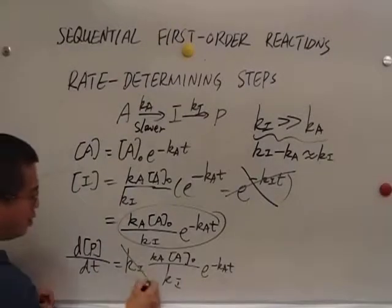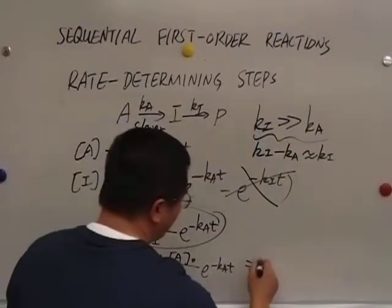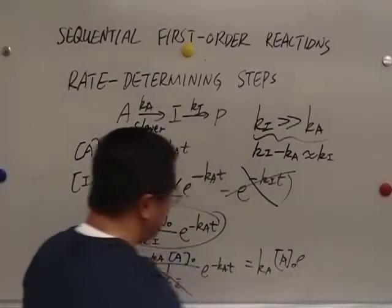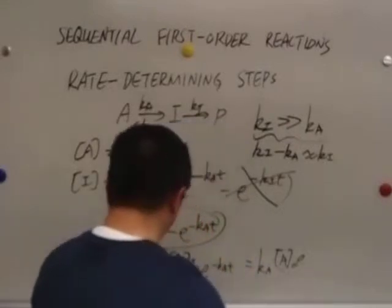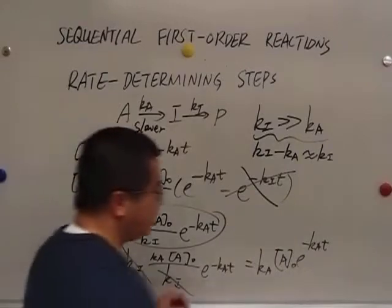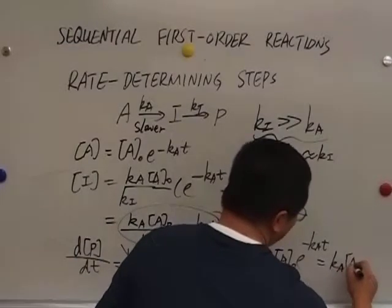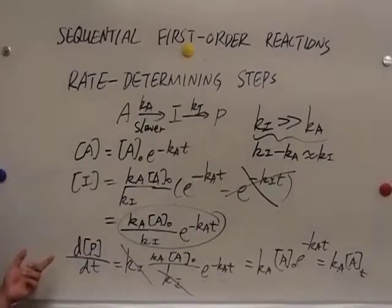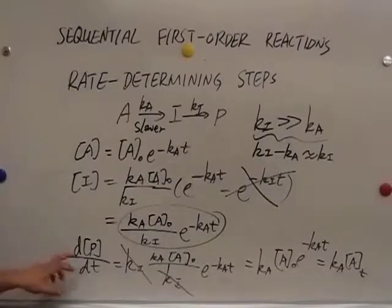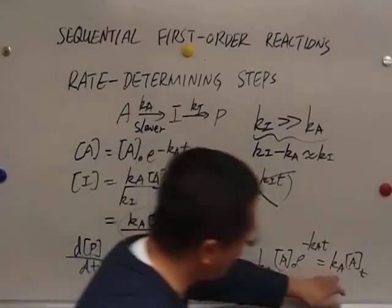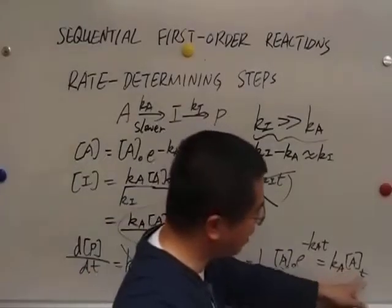And then we can see Ki and Ki cancel. The result is Ka times A naught times e to the power of negative Kat. And this is equal to Ka times A at time T.